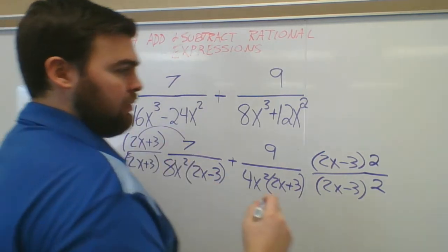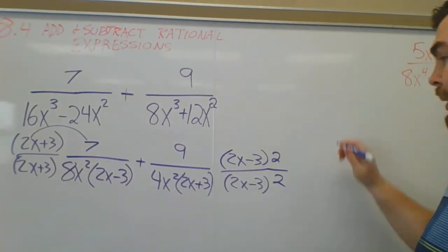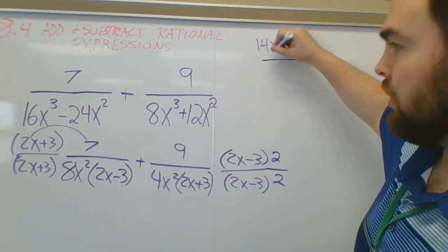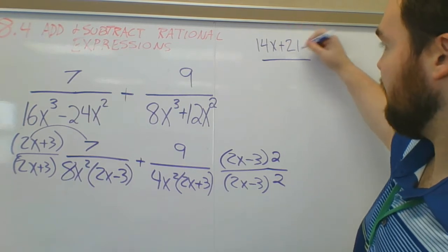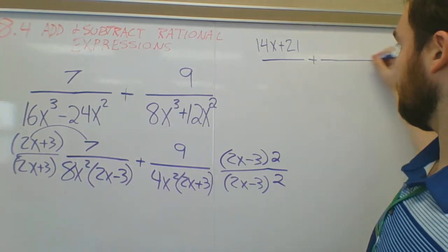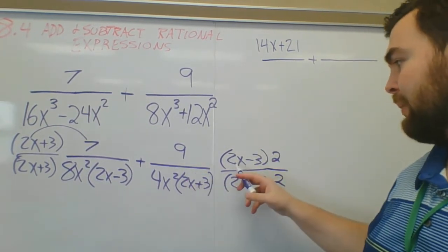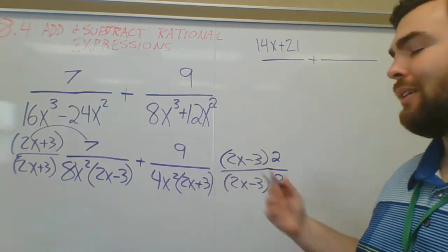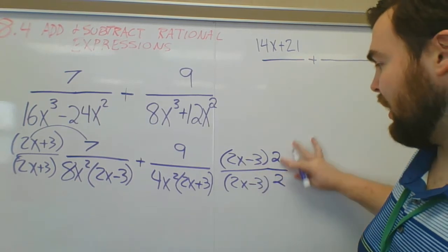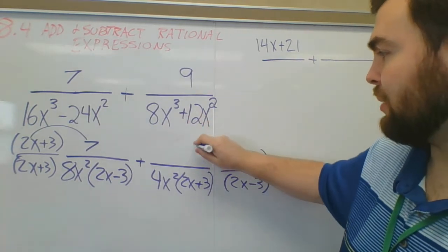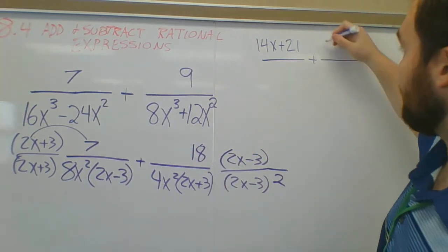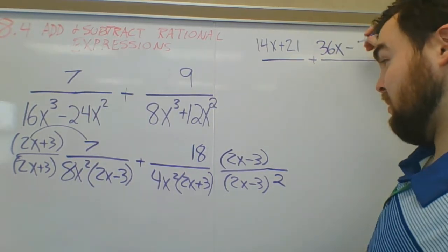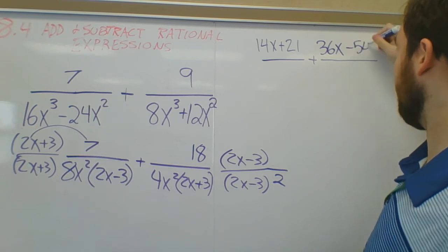So 2x times 7 gives me 14x, and 3 times 7 gives me 21. Plus — here's where some people get tricked — I have 9 times (2x minus 3) times 2. If you have two monomials, 9 and 2, just multiply them together: 9 times 2 is 18. So 18 times 2x is 36x, and 18 times negative 3 is negative 54.